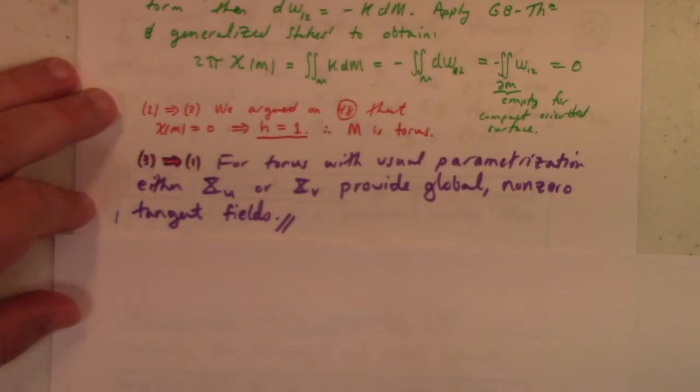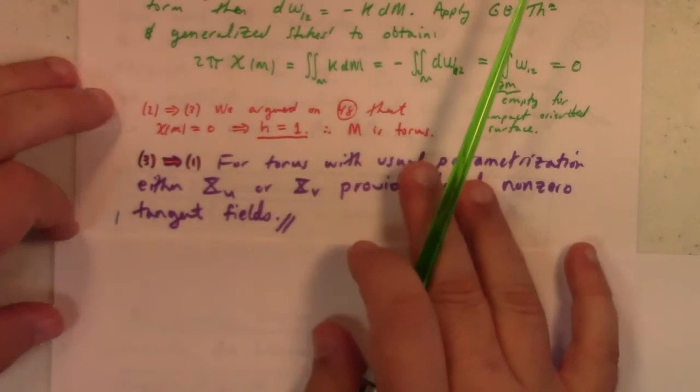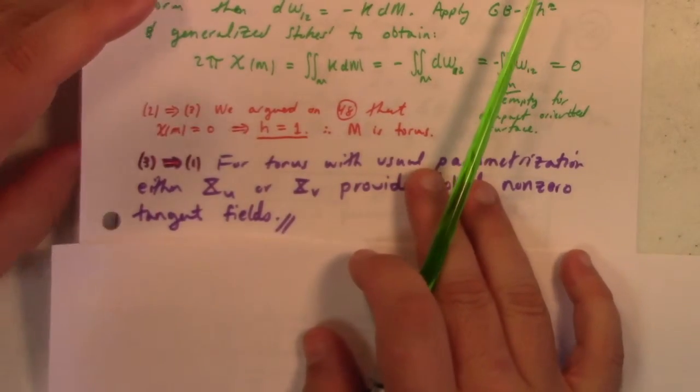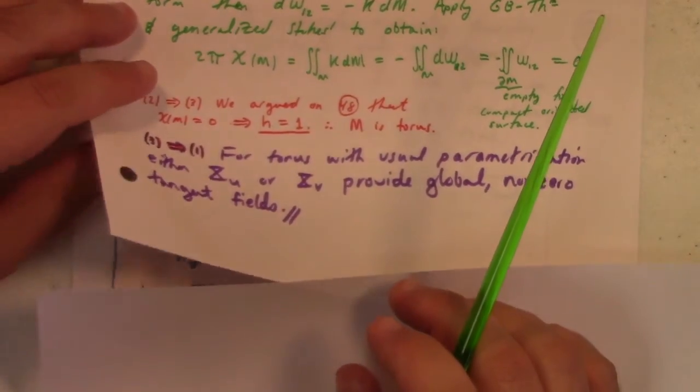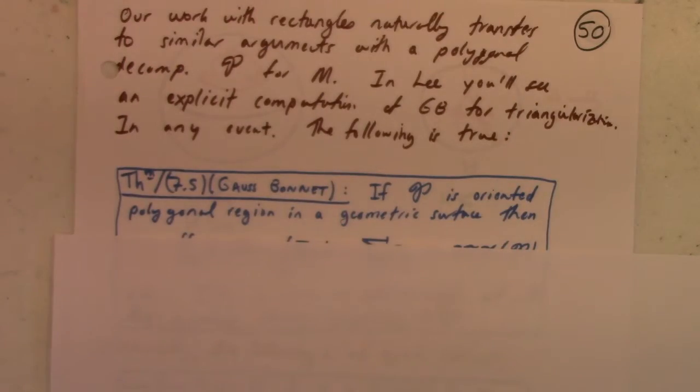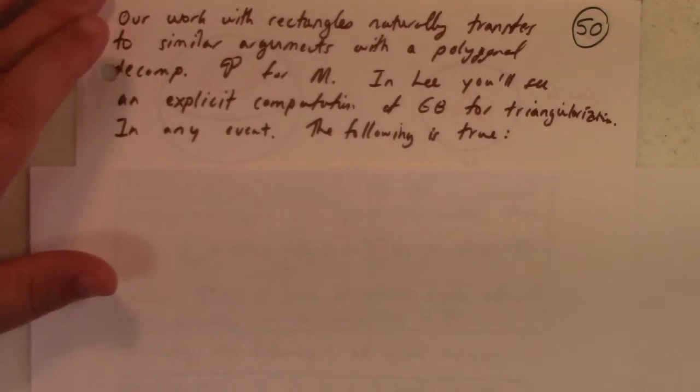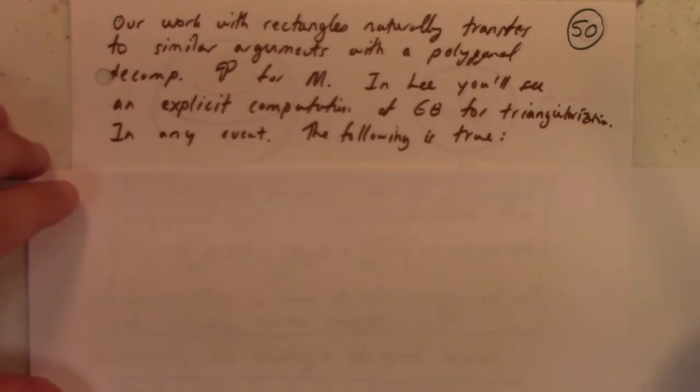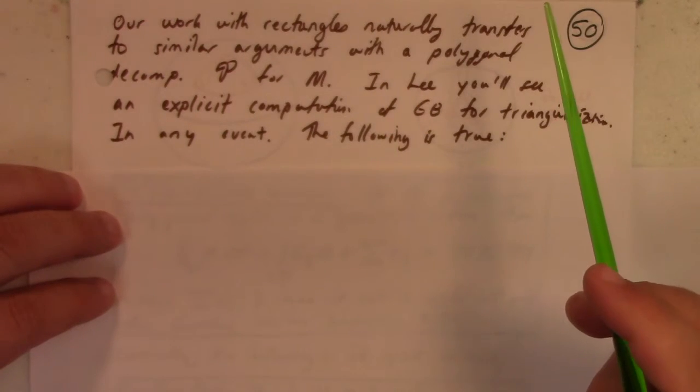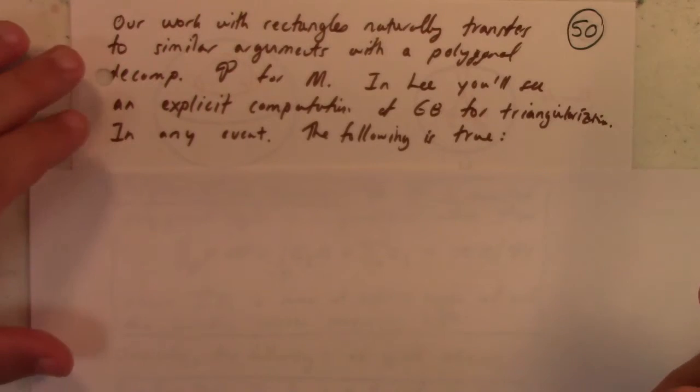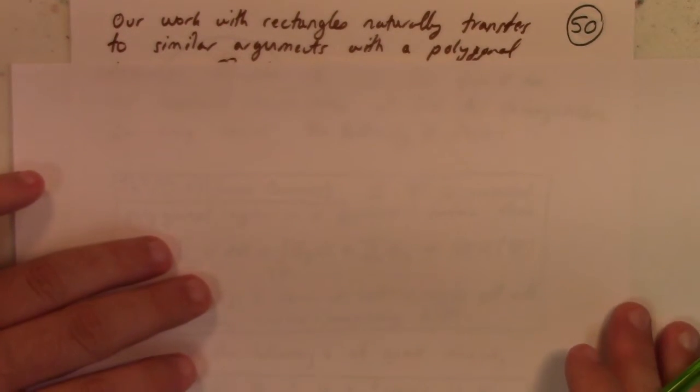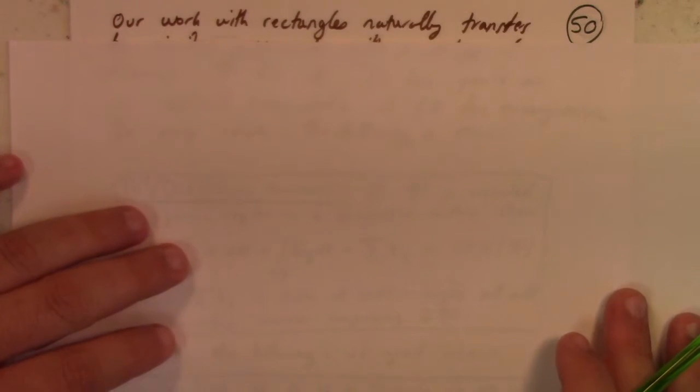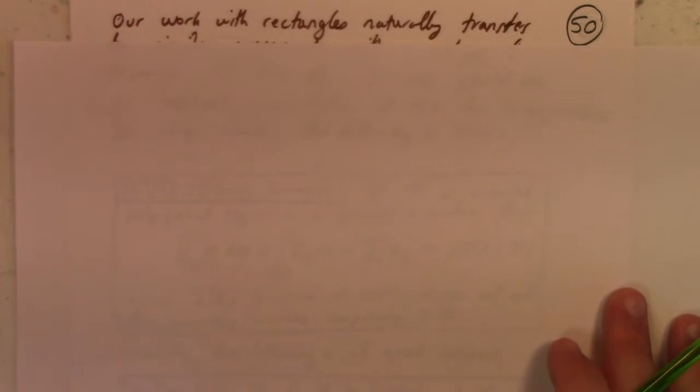One of the side effects of this corollary is that there does not exist a non-vanishing tangent vector field on a sphere, which means that if you're combing your hair and you had a head which was a sphere, somewhere you've got to have no hair.